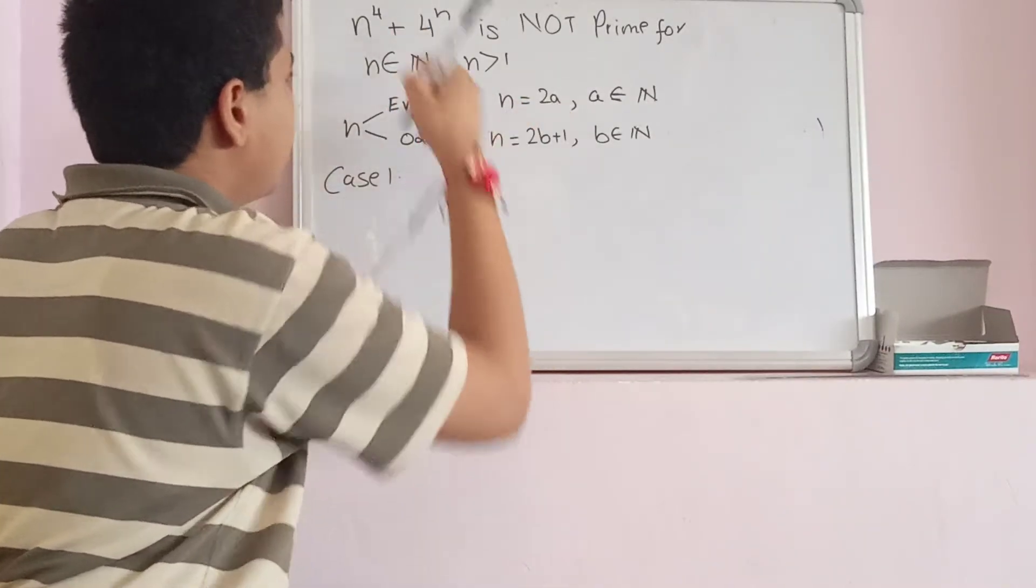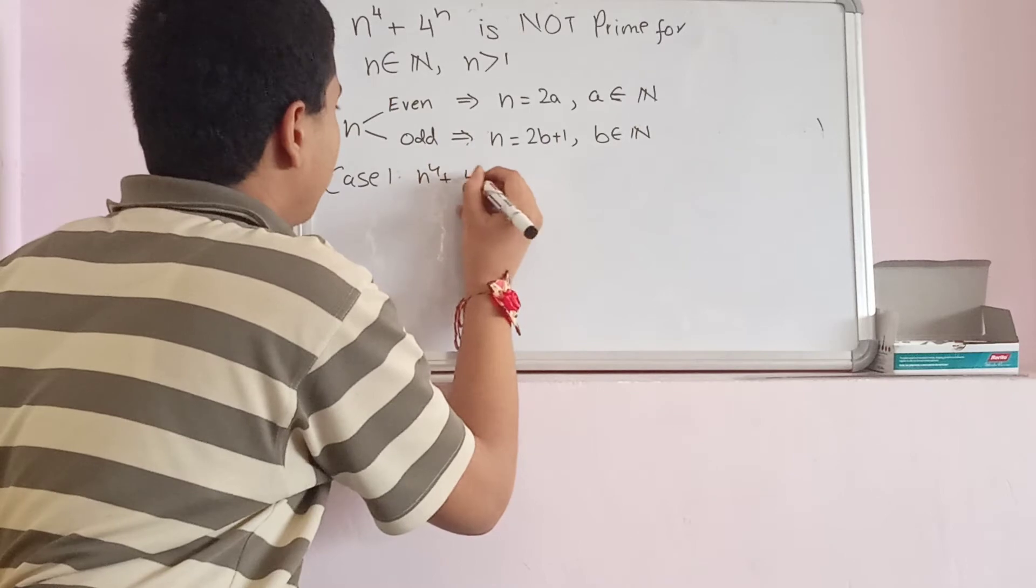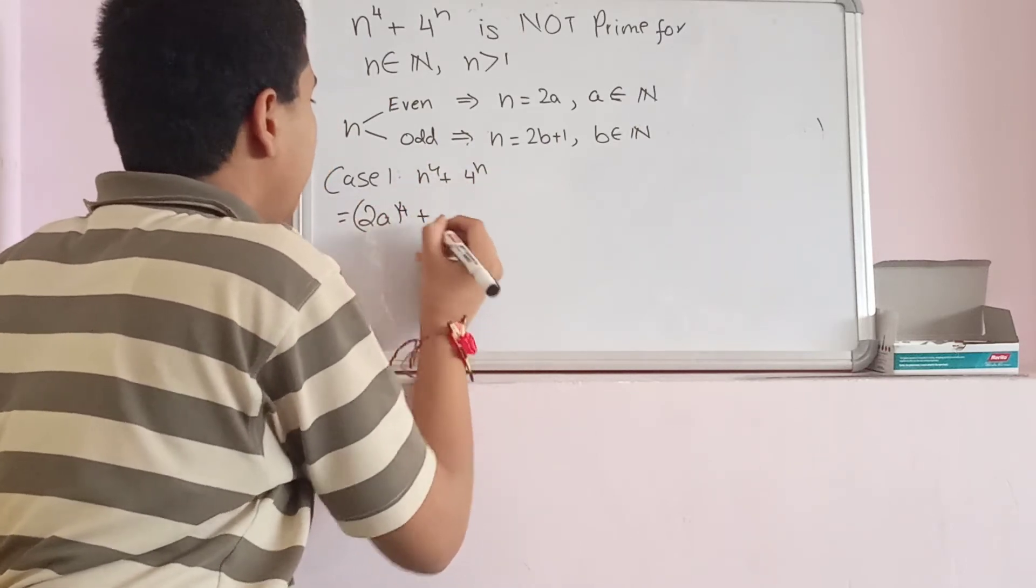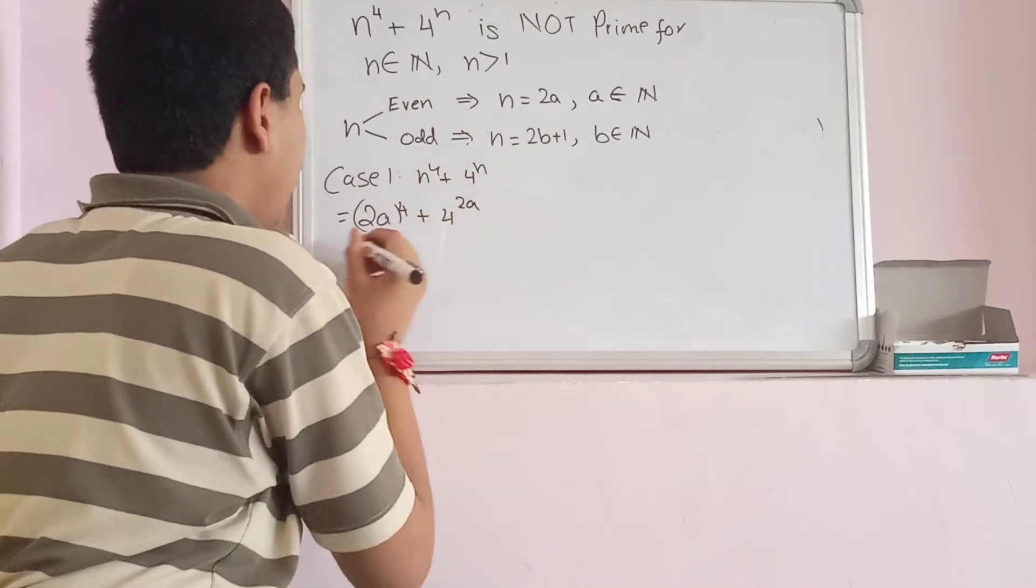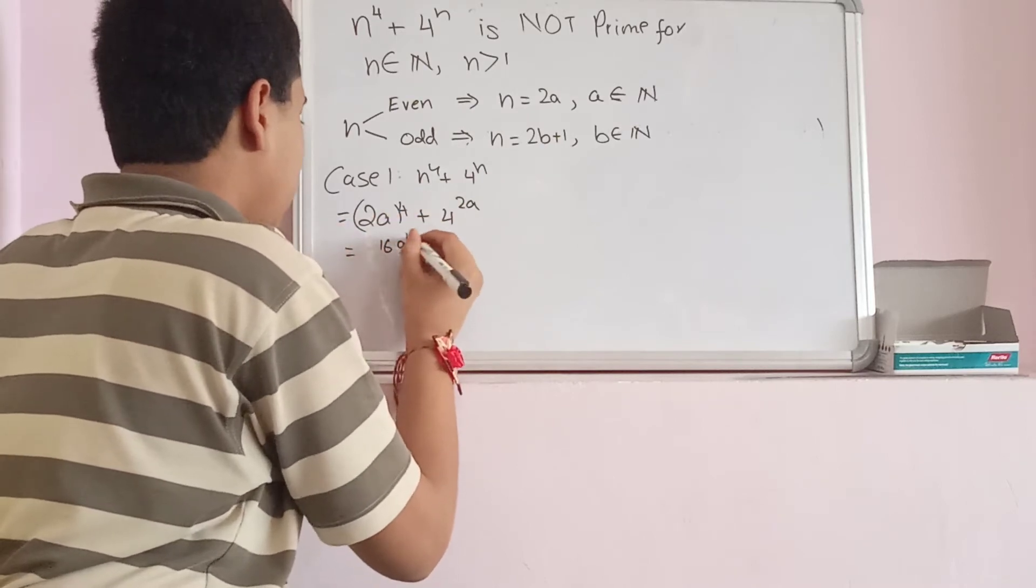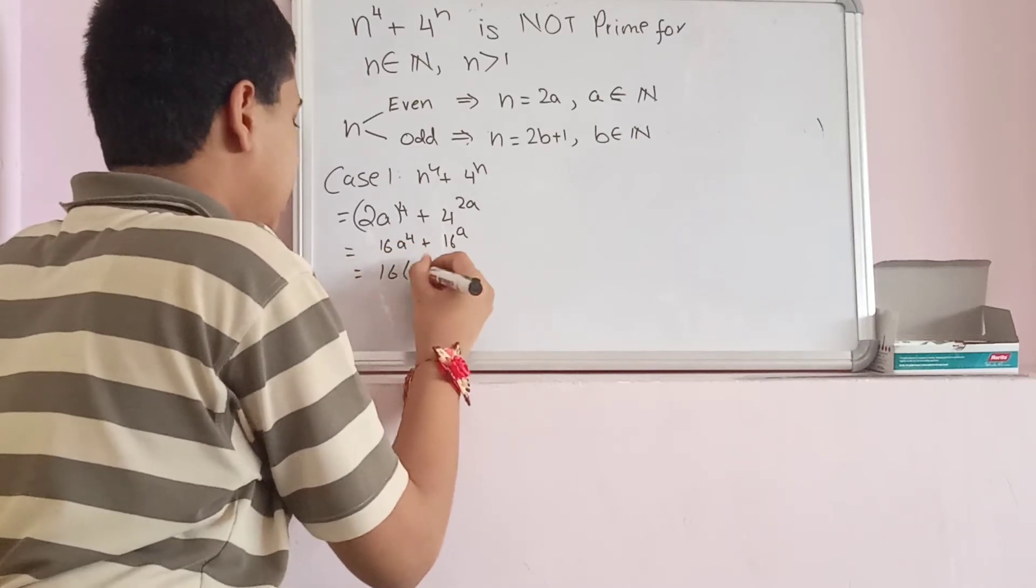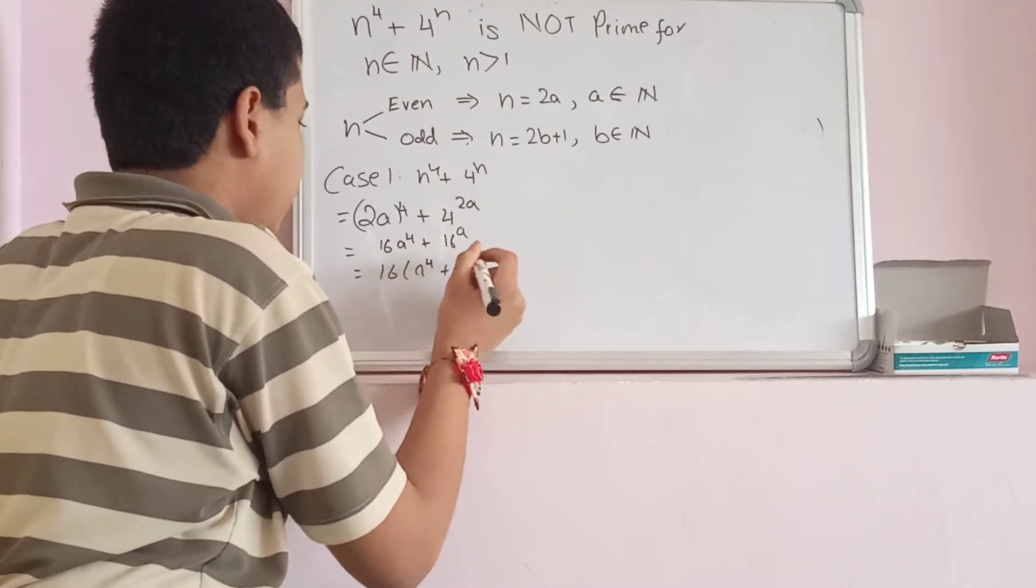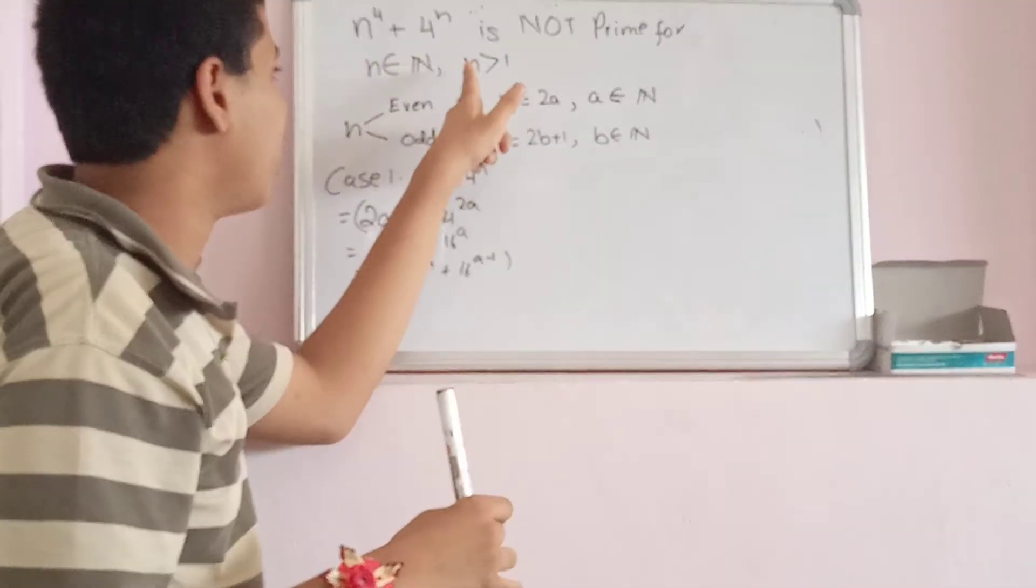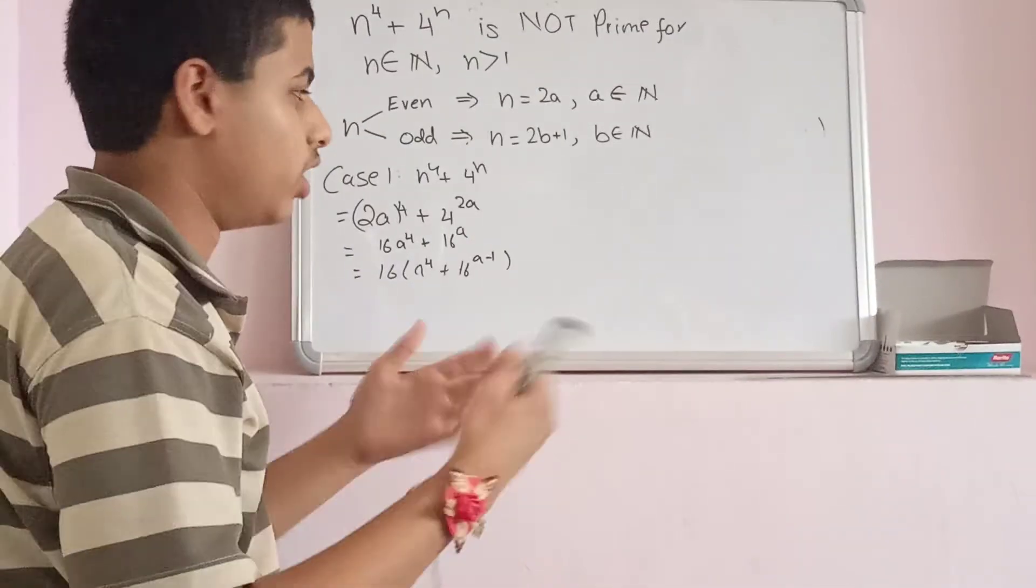Well, if n is even, just put it in place of n. n^4 + 4^n becomes (2a)^4 + 4^(2a), which I can write as 16a^4 + 16^a. We can always factor 16 out, which means that this is always a multiple of 16 when n is even. And so it can never be prime because it is a multiple of 16.